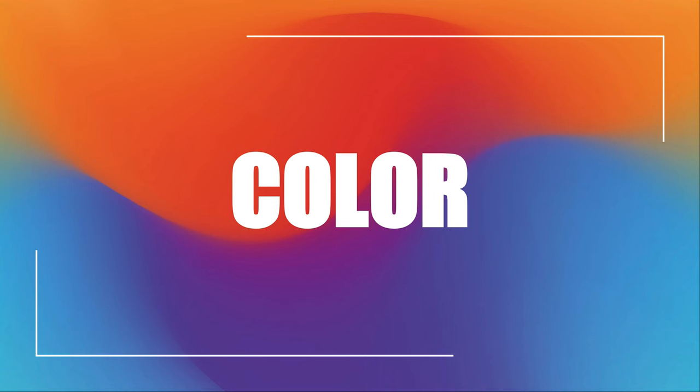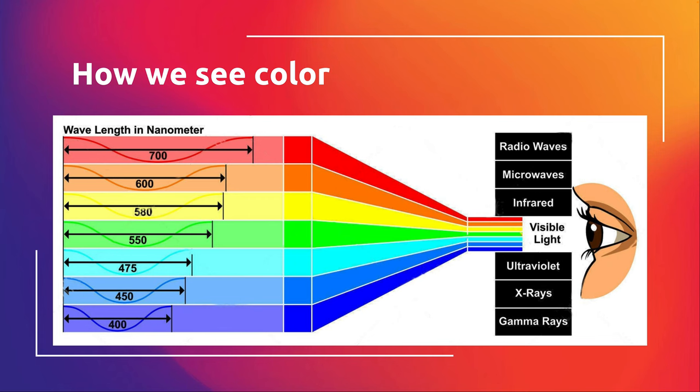Talking about color — we won't get into a ton of the science of it, honestly, because I don't know a lot of the science of it. But generally, color is viewed through visible light waves.